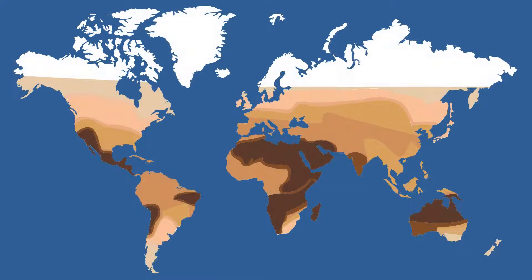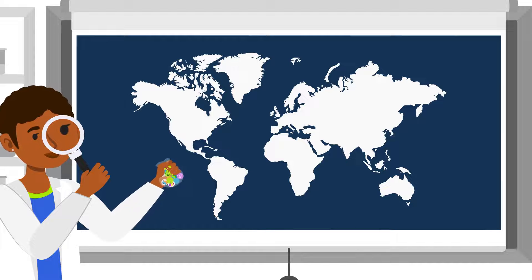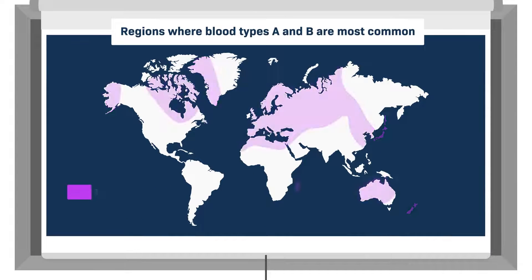Now, if we inherited biological traits as a package according to the race we are perceived as, we'd expect to see the same geographical distribution of other biological traits. Let's look at the distribution of A and B blood types.